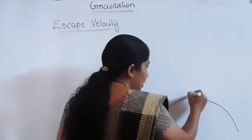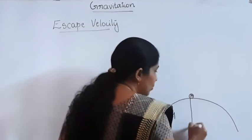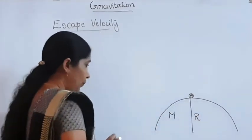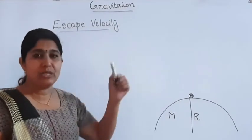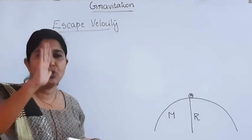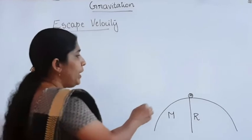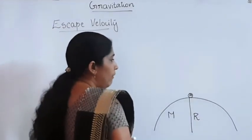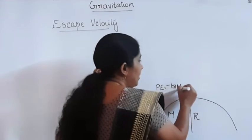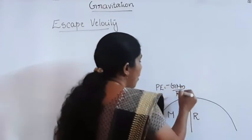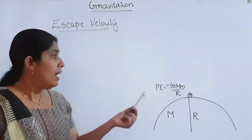We consider the Earth. Earth's mass is capital M, the mass of the body is small m, and the radius of the Earth is R. This body is on the surface of the Earth. The potential energy of this body on the surface is equal to minus GMm divided by R.